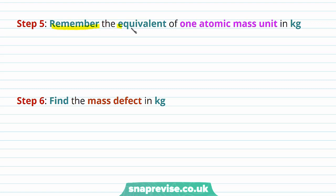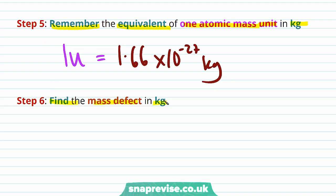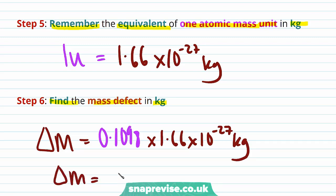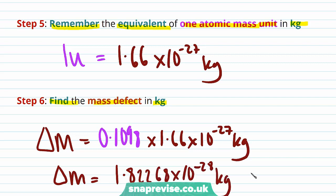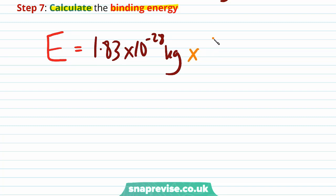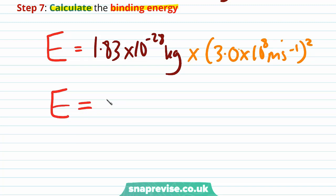Step 5: recall that 1u = 1.66 × 10⁻²⁷ kg. We convert the mass defect to kilograms by multiplying: 0.1098 × 1.66 × 10⁻²⁷ = 1.82268 × 10⁻²⁸ kg. The final step is to calculate the binding energy by substituting into E = Δm·c², which gives a binding energy of 1.65 × 10⁻¹¹ joules to three significant figures.